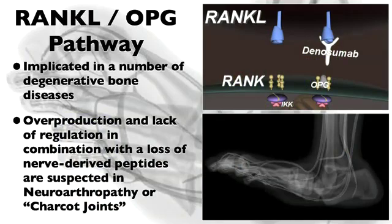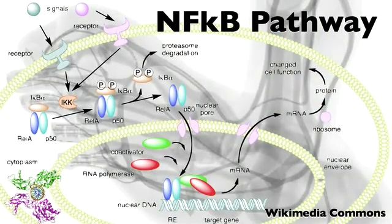In patients with neuropathy, the RANKL-OPG pathway is thought to mediate the development of neuropathic osteoarthropathy or Charcot joint. An illustrative depiction of the RANKL pathway is as follows.